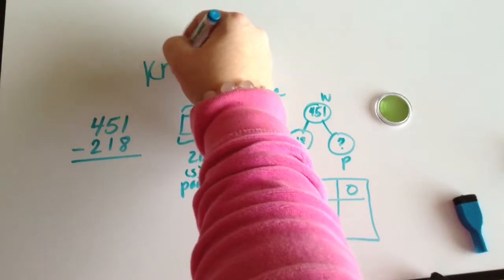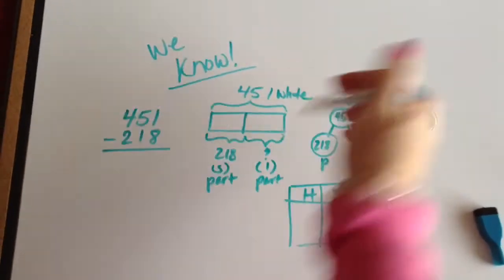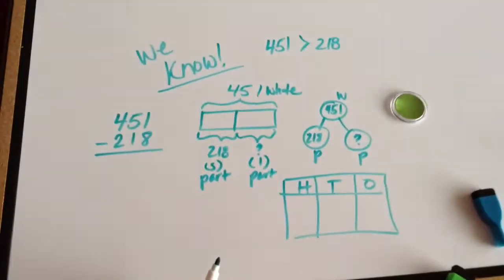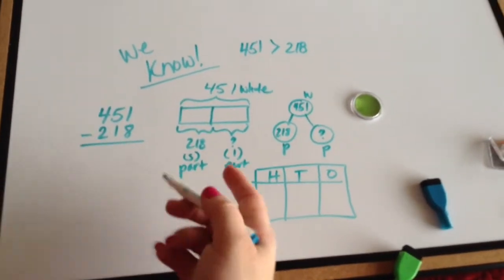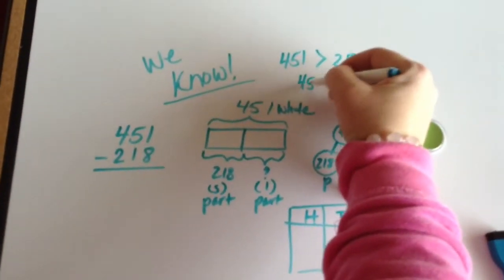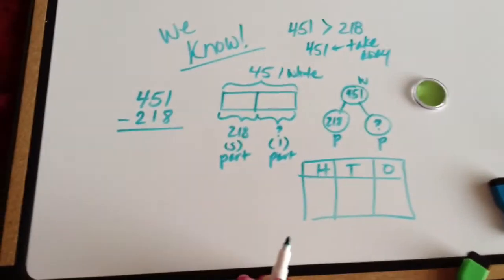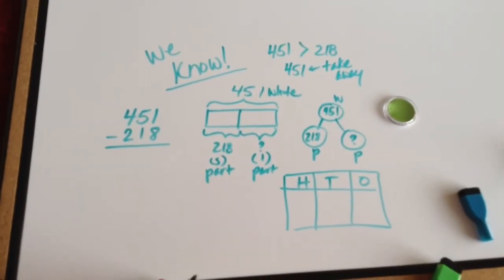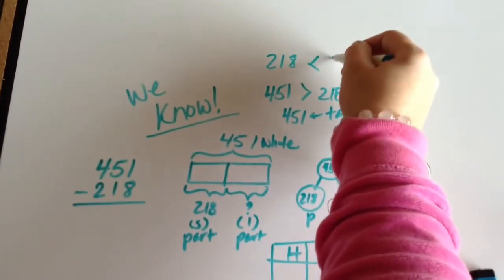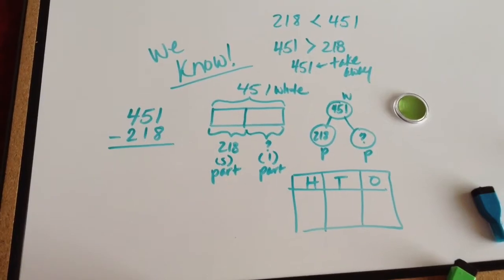As we know all these things, we also think about what other things do we know. We know 451 is greater than 218. What are the things that we know? Well, we know we take away from our larger number, so we know our larger number is 451. So we take away from this larger number. And we're doing all this thinking before we even get started. So you might also say, well, 218 is less than 451.